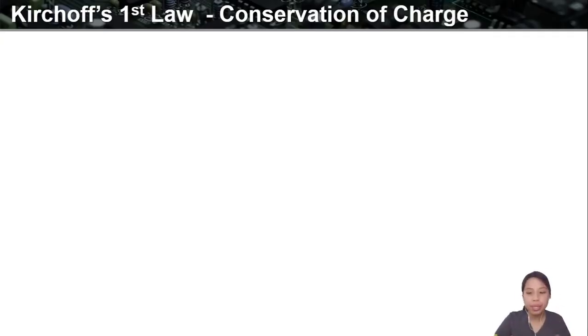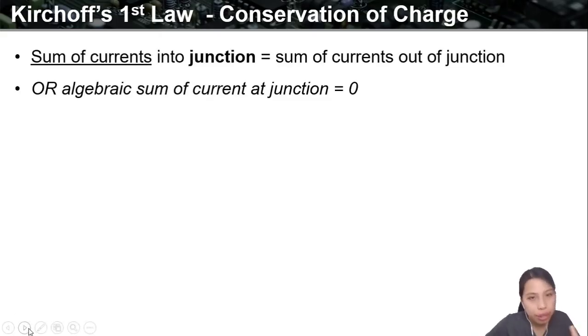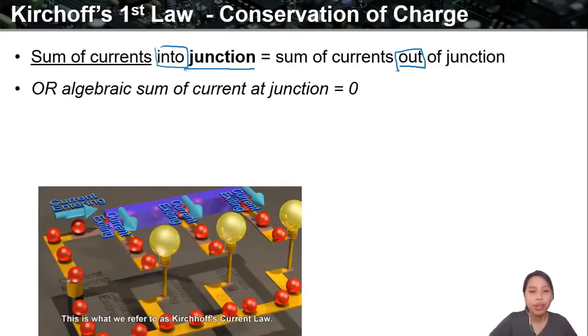So Kirchhoff came up with this law that basically just describes what he sees. And the law goes like this. Based on that thing we just saw, the sum of currents into a junction—junction is an important idea here—it's equal to the sum of currents out of a junction. Hang on to the second statement first. But what does this mean? Sum of current into junction, sum of current out of junction.